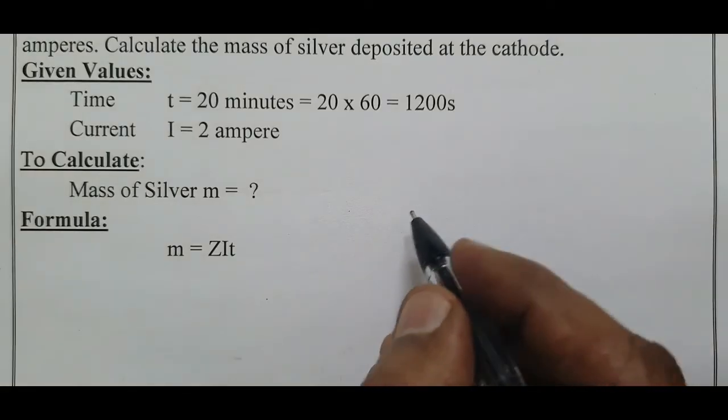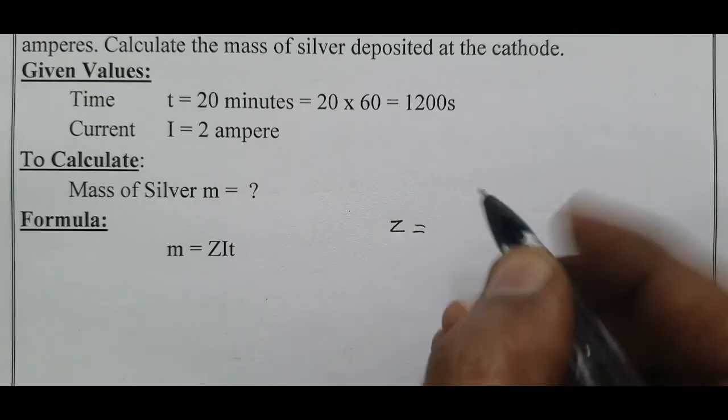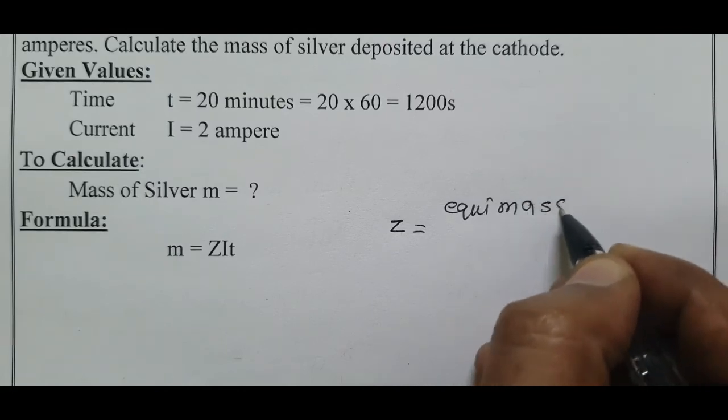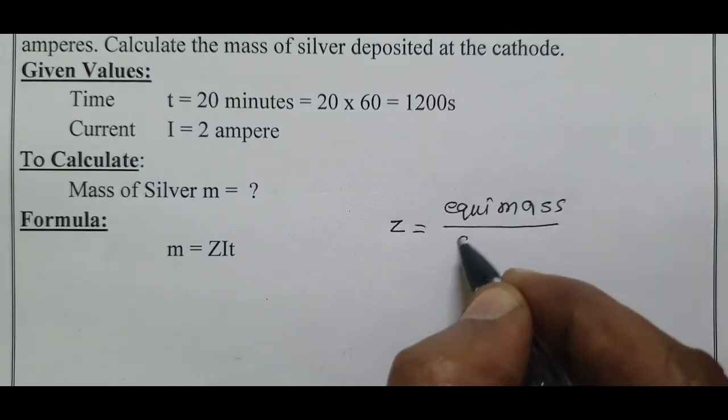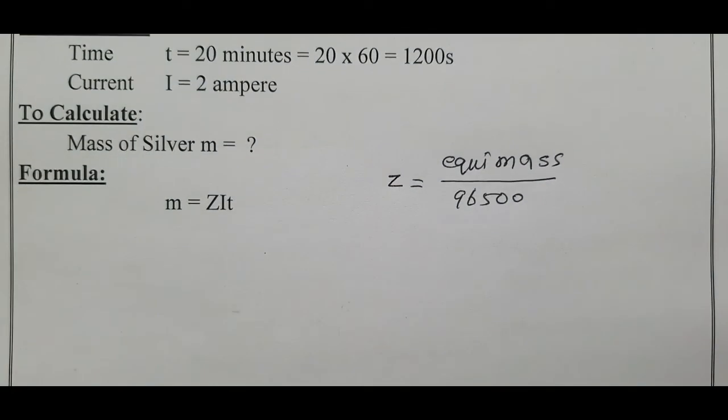We know the formula used to calculate the electrochemical equivalent is Z = equivalent mass divided by 96,500. Equivalent mass for an atom equals atomic mass divided by valency.